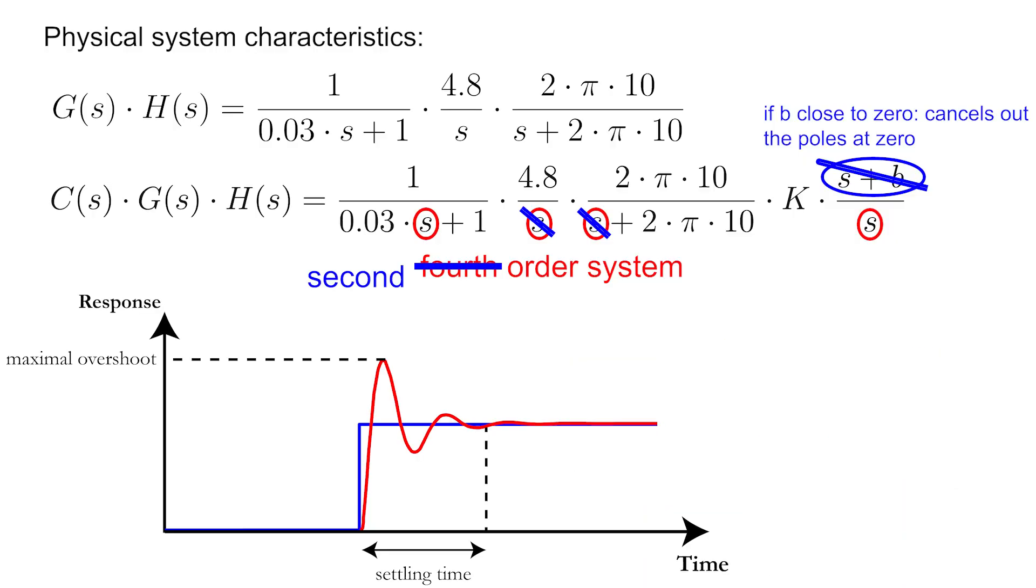The step response of a general second-order system, which is displayed on the screen, can be characterized by two parameters, the maximal overshoot and the settling time. The settling time is defined as the time at which the response goes to within 2% of the desired value. Let's say that you want a system to settle within half a second with a maximal overshoot of 10%, as displayed on the screen.